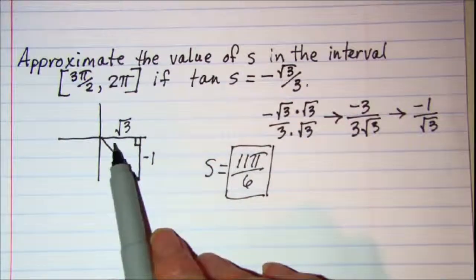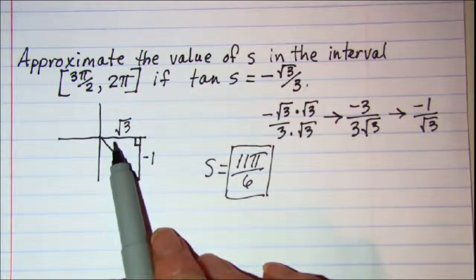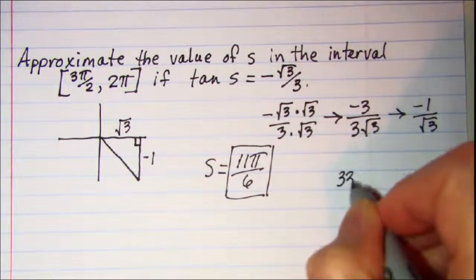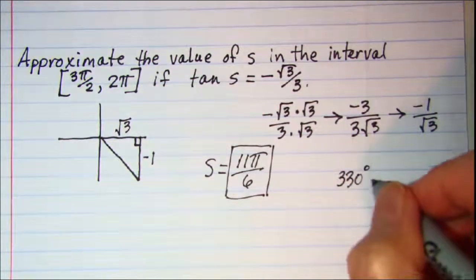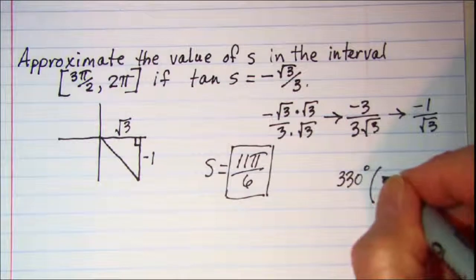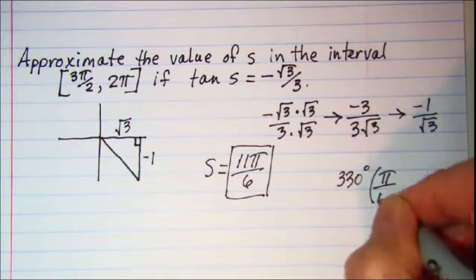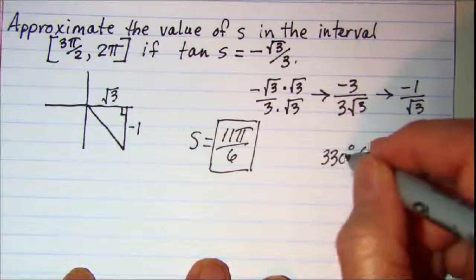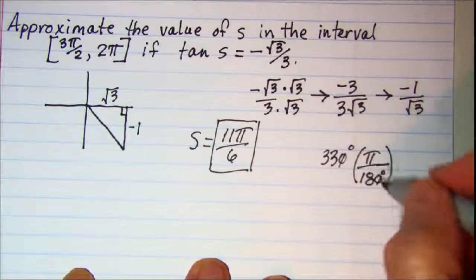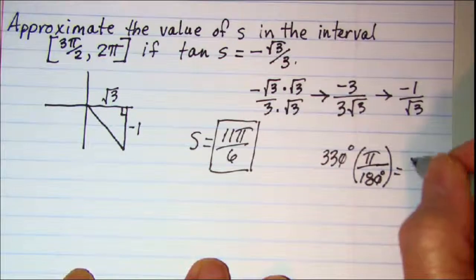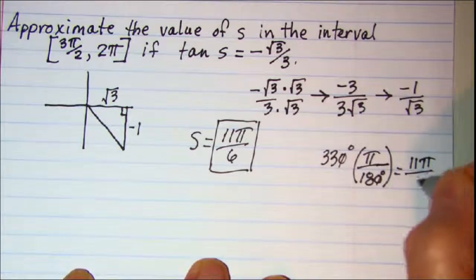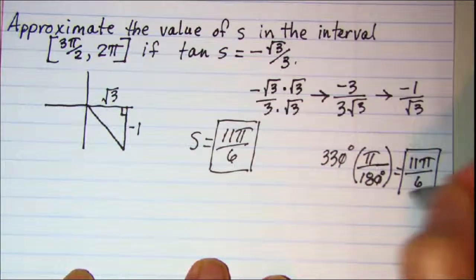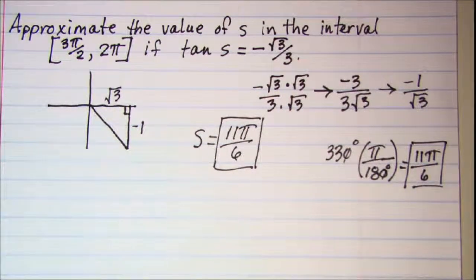If you need to, you can do a conversion — some students prefer that, though it takes more time. A 30-degree reference angle in quadrant 4 would be 330 degrees. To convert that to radians, multiply by pi over 180. The zeros cancel, and dividing top and bottom by 3 gives us 11 pi over 6. So you can also arrive at the answer by converting from degrees to radians.